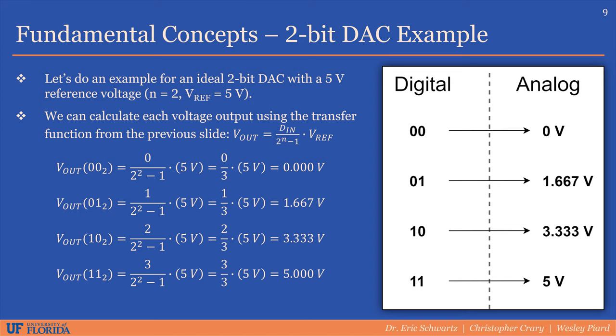Notice that the only possible discrete analog output values are in 1.667 volt intervals. This process of using the transfer function as a mapping between digital and analog domains is similar for an ideal DAC of any number of bits, in other words, a DAC of any resolution. Common resolutions for a DAC are 10-bit, 12-bit, 16-bit, etc. The higher the resolution, the finer the voltage increment between each digital input value.